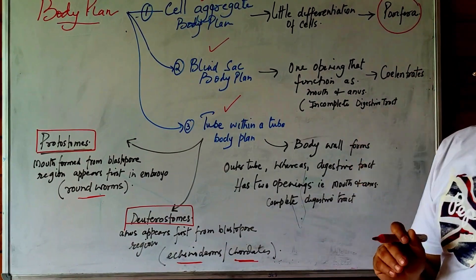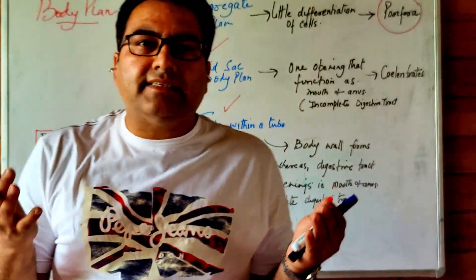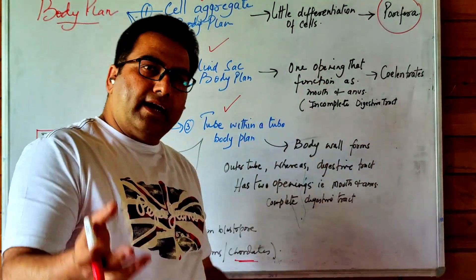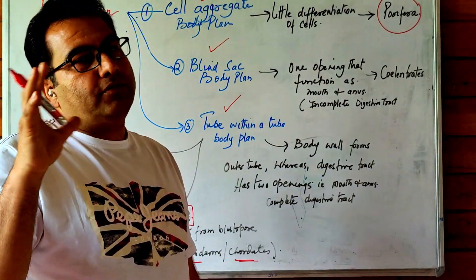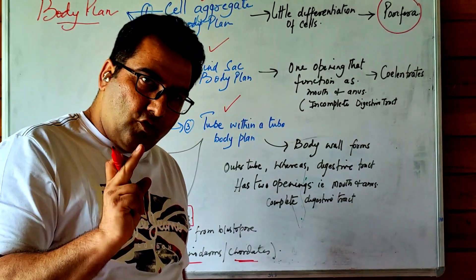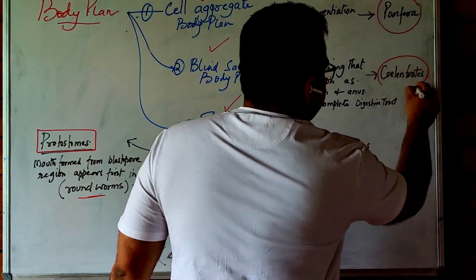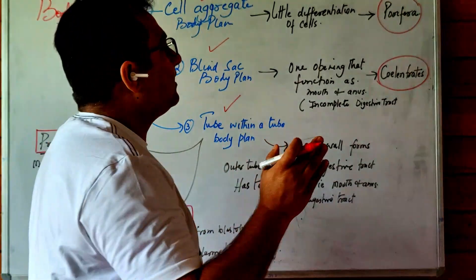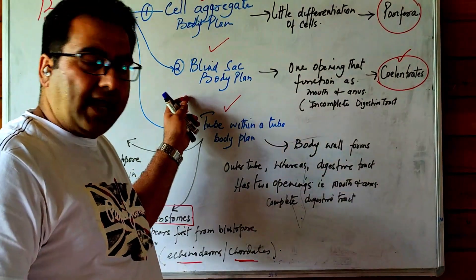The blind sac body plan is like a sac with only one opening, which functions as both mouth and anus. This is an incomplete digestive system, and this kind of plan is seen in cnidarians, which have only one opening acting as both mouth and anus.